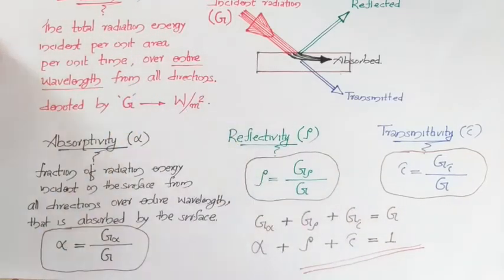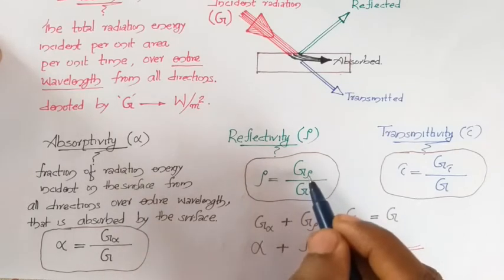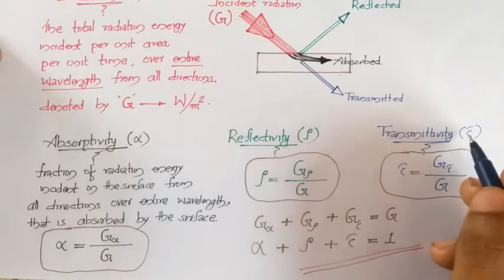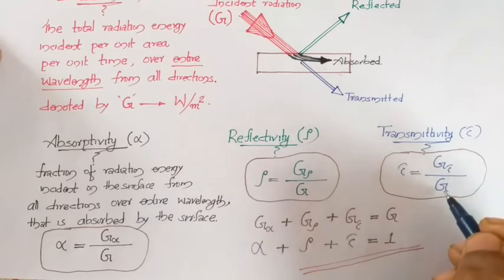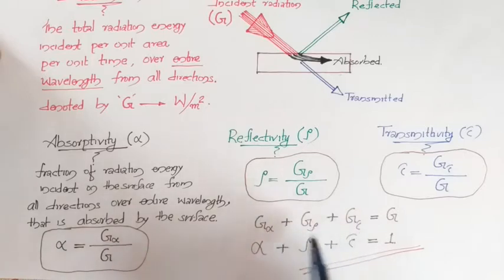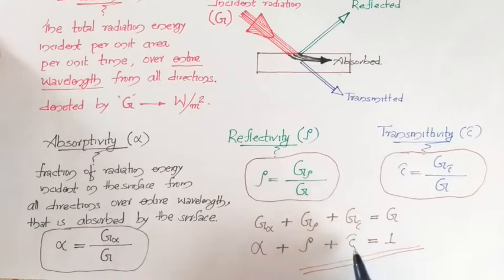Similarly, reflectivity is the total amount of energy reflected back, covering the entire wavelength from all directions, divided by the total energy incident. Transmittivity tau is the ratio of energy transmitted to total energy incident. The total incident energy is split three ways: absorbed, reflected, and transmitted, so G_alpha plus G_rho plus G_tau equals total irradiation G. Dividing through by G gives alpha plus rho plus tau equal to 1.